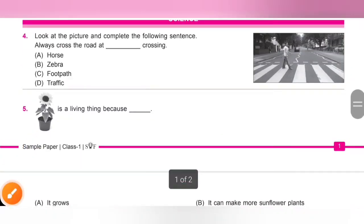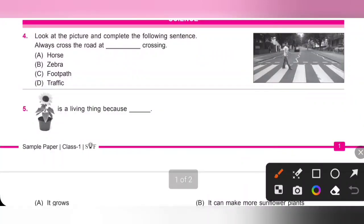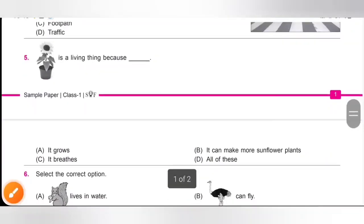Next section is Science. Fourth one, look at the picture and complete the following sentence. Always cross the road at dash crossing. So, always cross the road at zebra crossing. Option B is the correct answer.